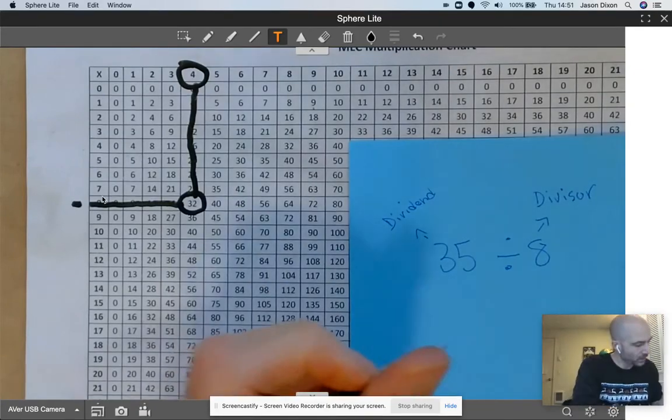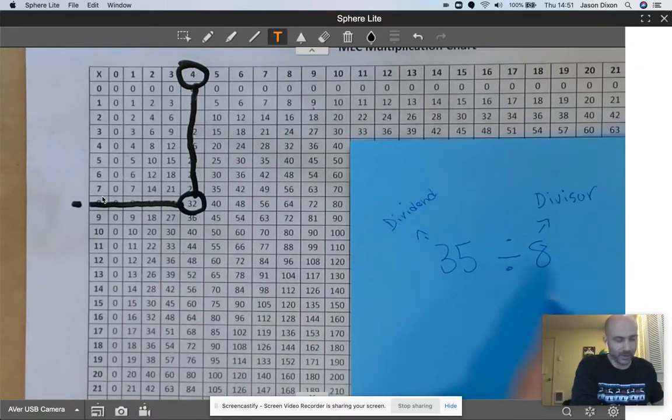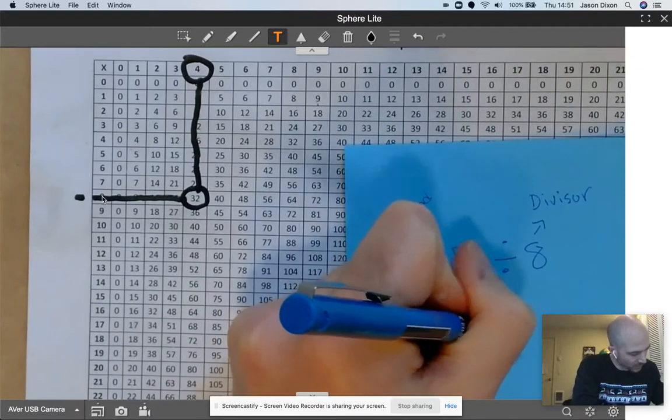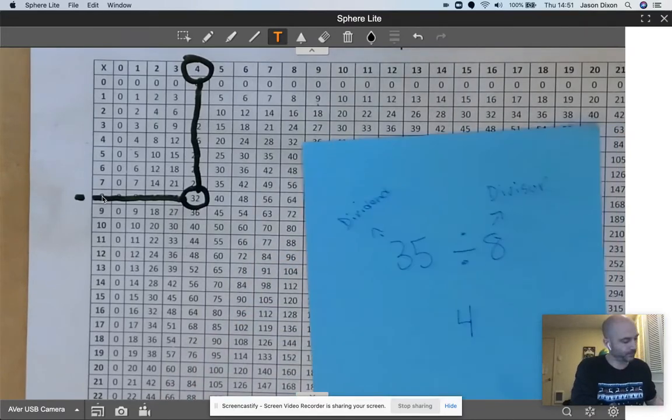Right. So I know that 35 divided by 8, part of it's going to be 4.